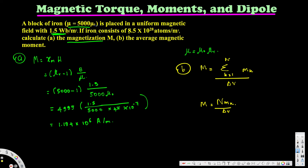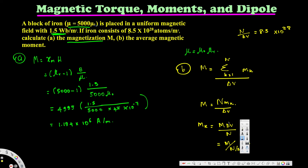The problem states iron consists of 8.5 times 10 to the power of 28 atoms per meter cubed, which we can write as N over ΔV equals 8.5 times 10 to the 28. We want to find mk, so rearranging gives mk equals M divided by (N over ΔV). We know M is 1.194 times 10 to the power of 6.